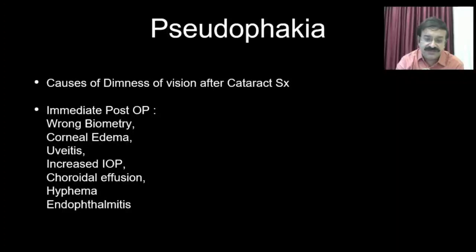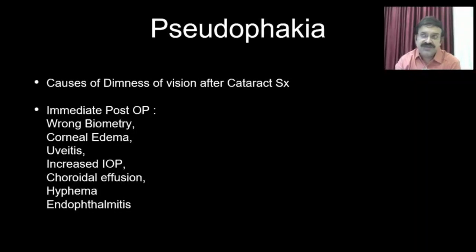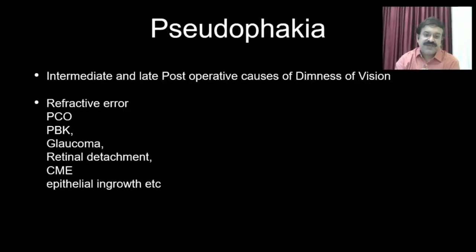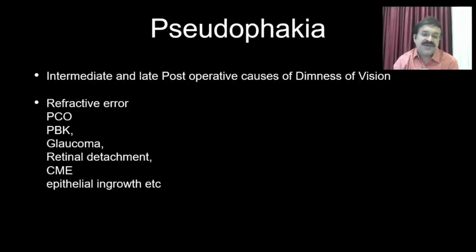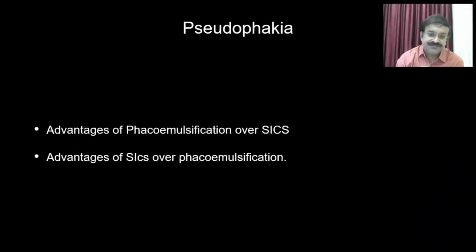The causes of dimness of vision post-cataract surgery: immediate postoperative causes include wrong biometry, corneal edema, uveitis, increased IOP, choroidal effusion, hyphema, and endophthalmitis. Intermediate and late postoperative causes include refractive error (high astigmatism), posterior capsular opacity (PCO), pseudophakic bullous keratopathy, glaucoma, retinal detachment, CME, and epithelial ingrowth.